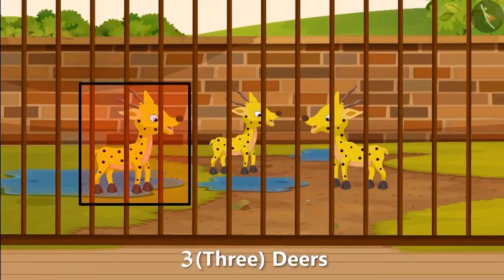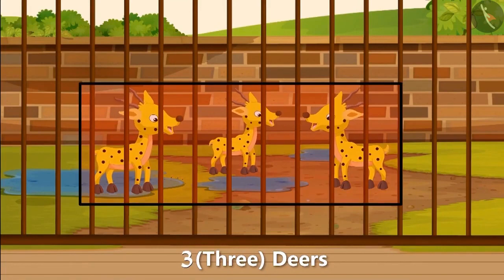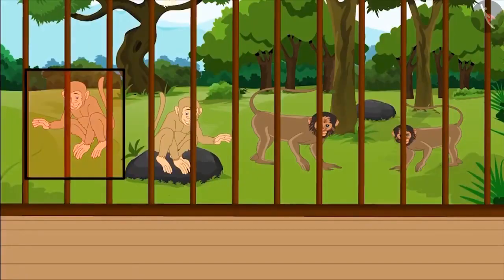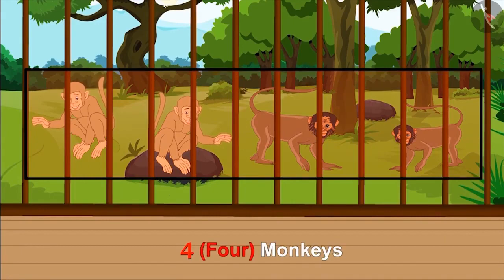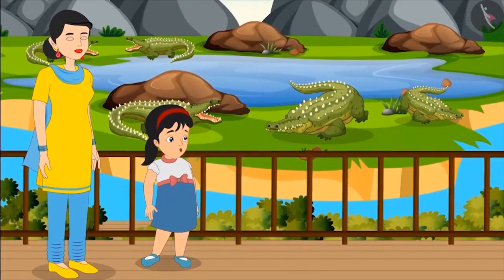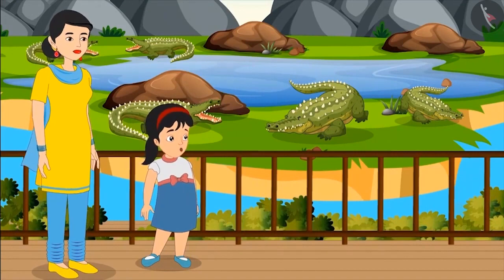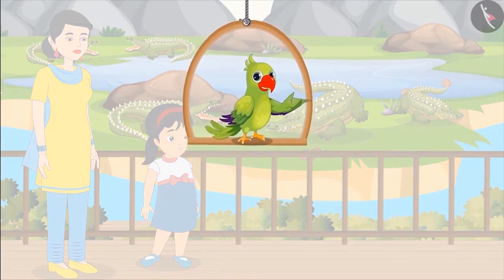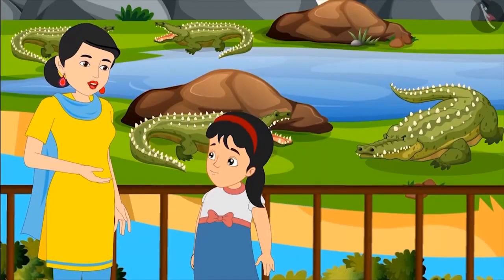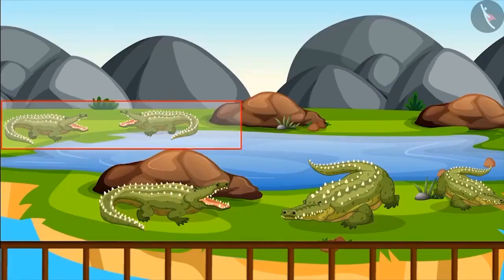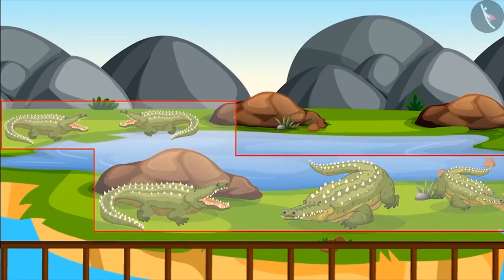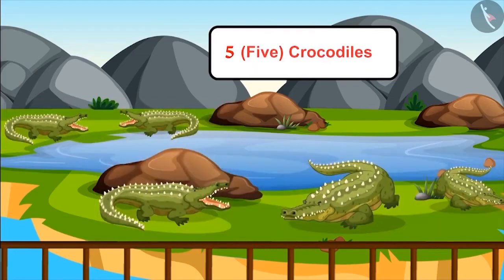There are one and two — two bears in that. The paddock next to it has one, two and three — three deers. And there are one, two, three and four — four monkeys in that. Mom, but which animal is in that water paddock? I have never seen it before. Children, can you tell me which animal is there in that water paddock and what is its number? My dear, there are crocodiles in that paddock. Can you tell me how many crocodiles are there? One, two, three, four and five. That means that paddock has five crocodiles.